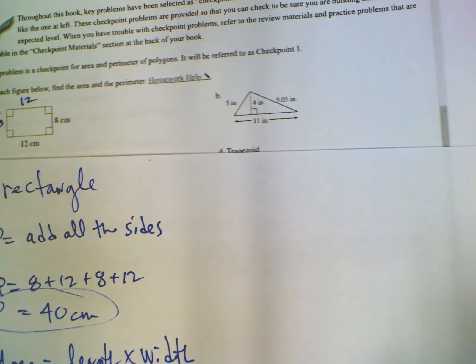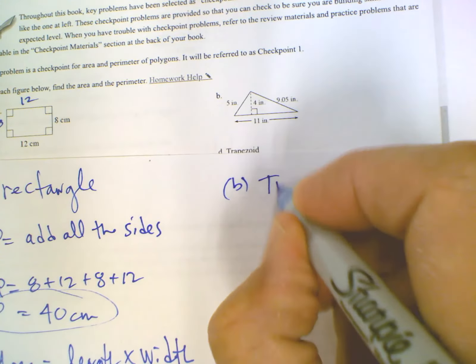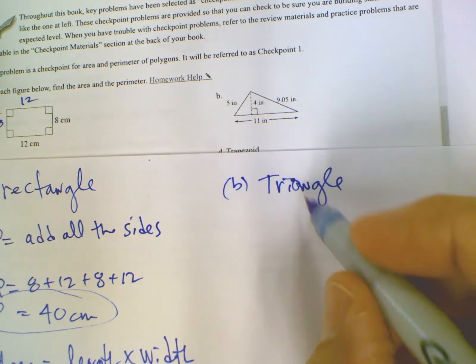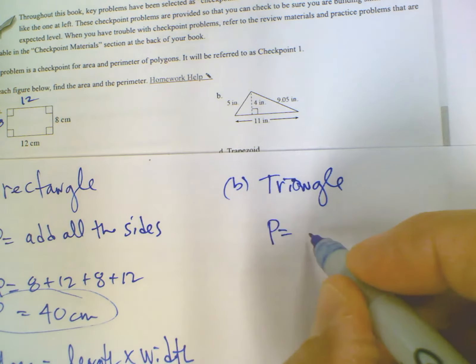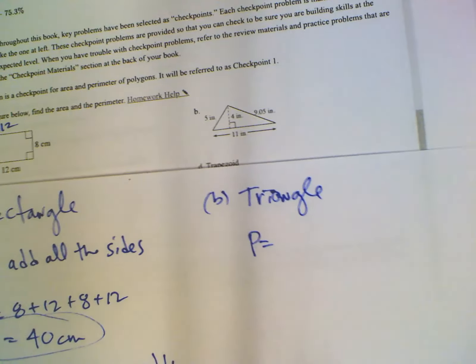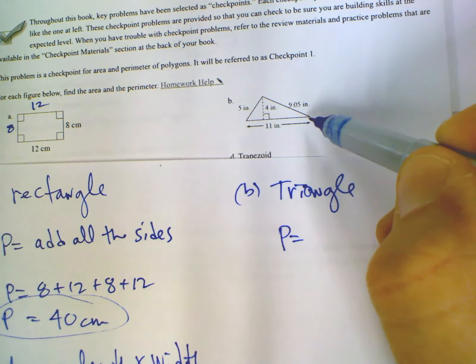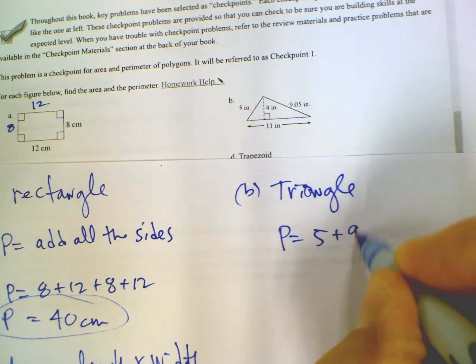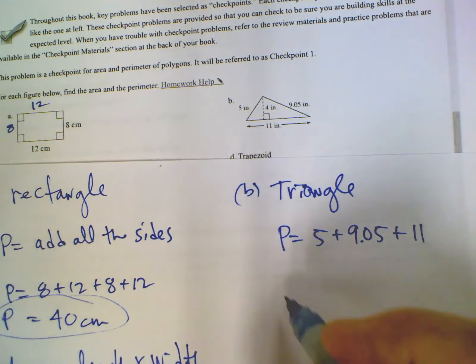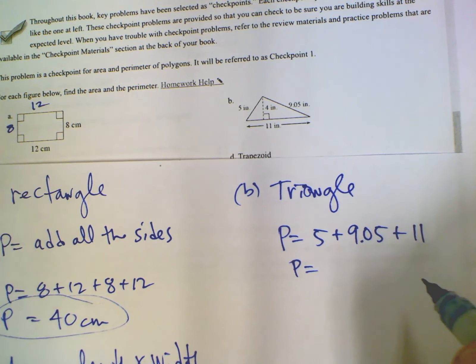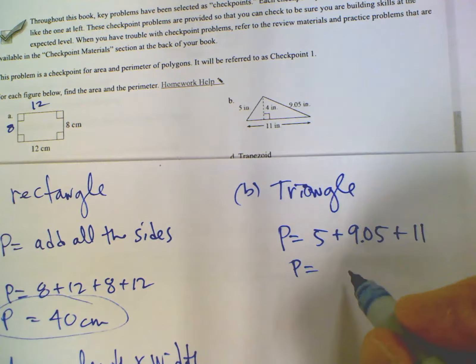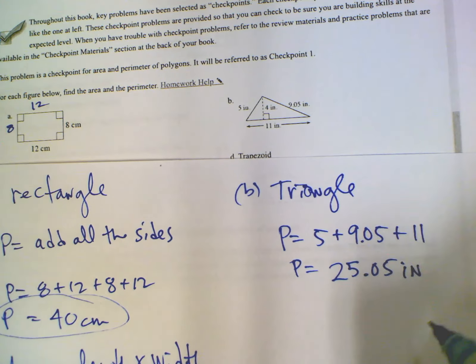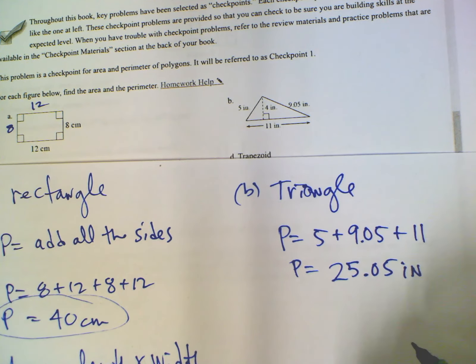B is a triangle. In order to do the area or the perimeter on the triangle, again, perimeter is same thing, add all the sides. I know my side lengths, they are listed there for me. So that's 5 plus 9.05 plus 11, all of that adds up to 25.05. And again, units are inches, so we just put the inches, the linear units.